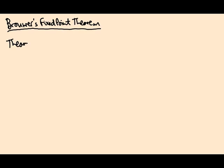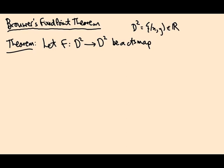What's the theorem? The theorem says, let F: D² → D² be a continuous map. Remember the disk is the set of points (x,y) in the plane such that the distance from the origin is less than or equal to one. This is the closed disk. So we've got some continuous map from the closed disk to itself. The claim is there exists a point x in D² such that F(x) = x, a fixed point.